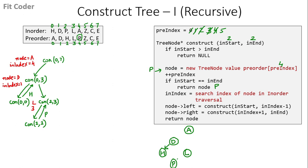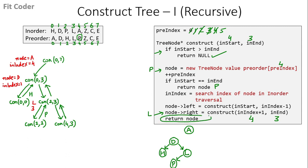Control goes back to construct(2, 3) where node is L and in_index is 3. We call for the right of L: construct(4, 3). Now start is greater than end, so we return null. L is done, control goes back to D. The right of D is now L - this link is joined. D also terminates and returns. Control goes back to A, and the left of A is D - this link is joined. Now node is A with in_index 4, so we call for the right of A with construct(5, 7).